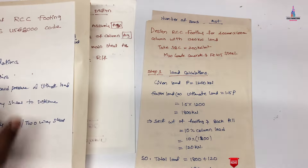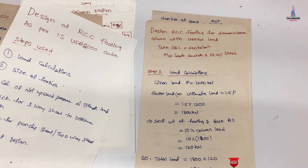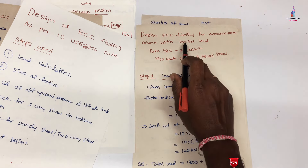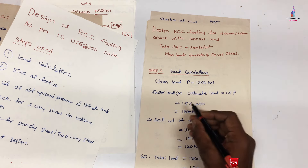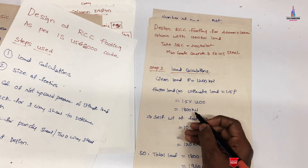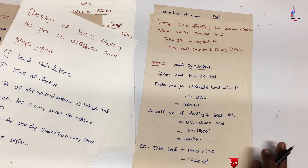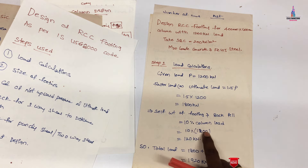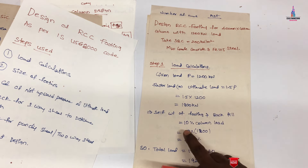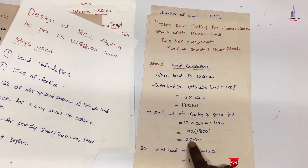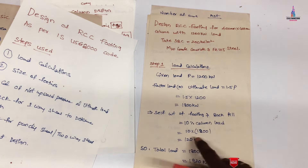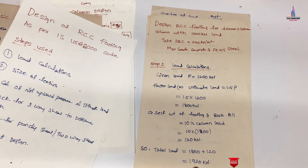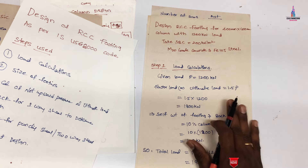Step 1 is the load calculation. The given load is 1200 kN. The factored (ultimate) load = 1.5 × 1200 = 1800 kN. For self-weight of footing and backfill, we consider 10% of the column load: 0.1 × 1200 = 120 kN. Therefore, total load on the footing = 1800 + 120 = 1920 kN.